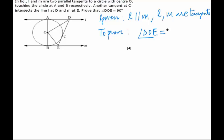Whenever we have to prove some angle equal to 90 degrees, what do we do? We try to prove the double equal to 180 degrees. For that we do a construction — we join OC.